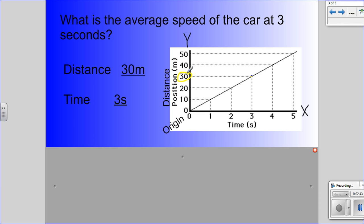Now what a lot of people are going to do is put 30 meters as your answer for the problem. That is not the answer for the problem. Let's go back and look at the question. It says, what is the average speed of the car at 3 seconds? Average speed.